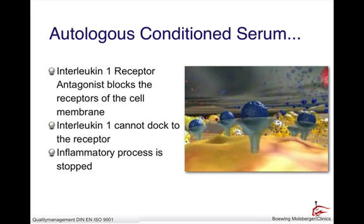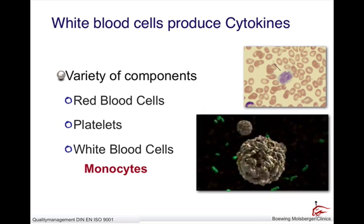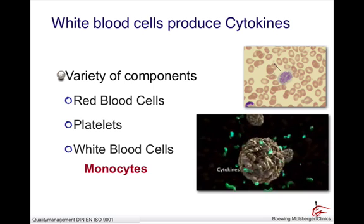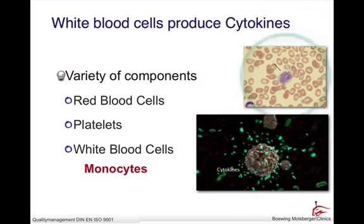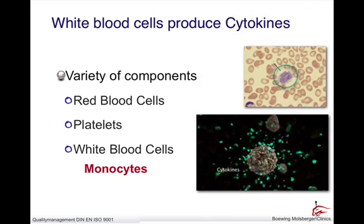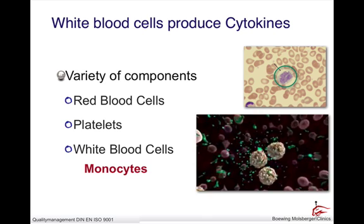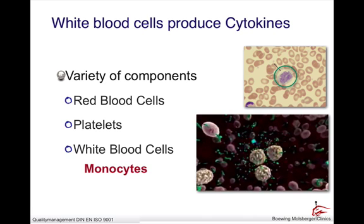The production of this important cytokine, interleukin-1 receptor antagonist, from the patient's own blood is the basic idea of orthokine. The blood contains a variety of cells, and what is interesting is a certain white blood cell — the monocyte — which is responsible for producing interleukin-1 receptor antagonist.